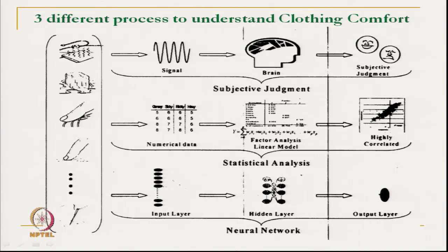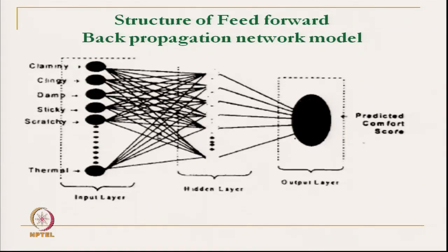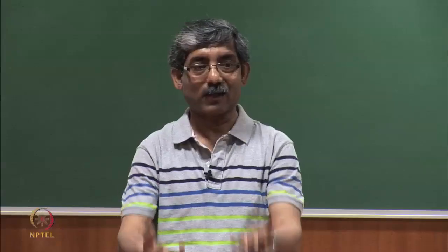The last and latest technique is neural network. In a neural network, we get different sensations and with different input layers, hidden layers, and output layers, we get the output value — like back propagation technique. Different comfort-related sensations are given as input — like clammy face, cleansing, damp, sticky, scratchy, thermal sensation — and then through the hidden layer, we get a predicted comfort value. This neural network technique can be used to get the psychological perception of clothing.